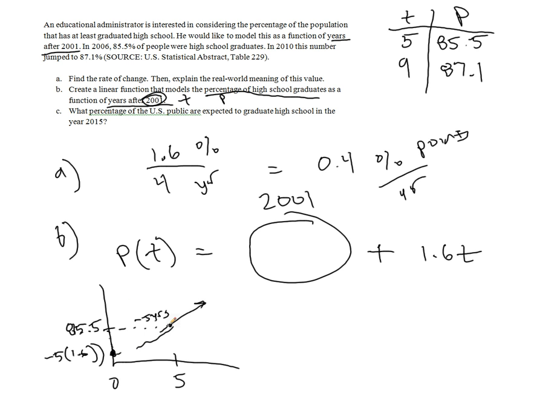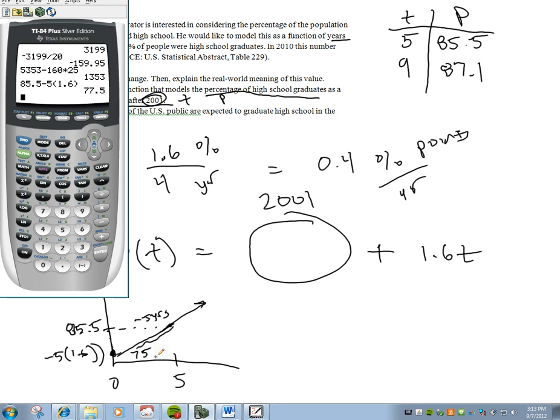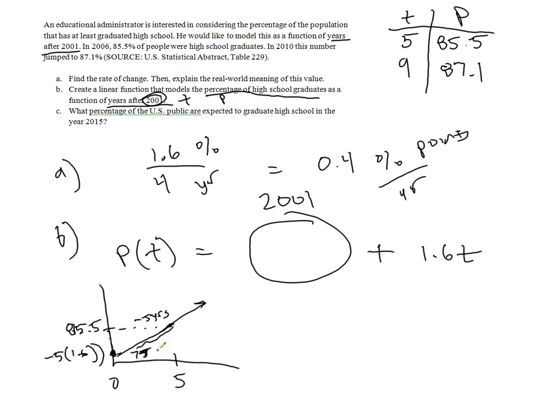85.5 minus five multiples of 1.6 puts us at 77.5. So this point right here, which will allow us to fill in the rest, is at 77.5%. So that allows us to say that in 2001, or the vertical intercept should be 77.5.